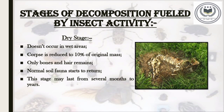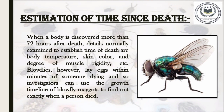This stage could last for several months to years. Now we will be discussing estimation of time since death. When a body is discovered more than 72 hours after death, details normally examined are body temperature, skin color and degree of muscle rigidity. Blow flies, however, lay eggs within minutes of someone dying, and so investigators can use the growth timeline of blow fly maggots to find out exactly when a person died. In some deaths, establishing the time a person died is extremely important — even the difference of a few hours can make a huge difference in convicting someone of a crime. It's at these times a forensic entomologist is called in to take maggot samples from the body, establish which type of blow fly it is, and which stage the blow fly maggot is at, in order to determine the time of death.